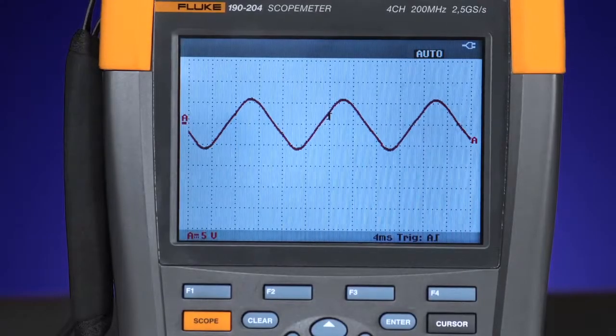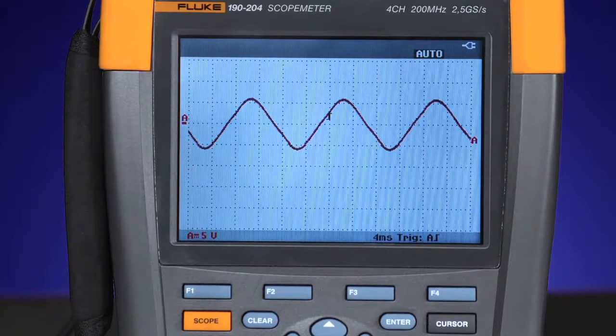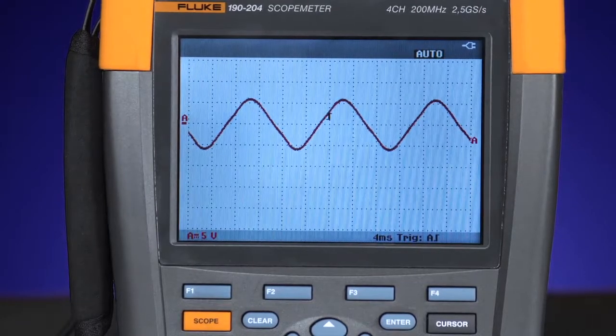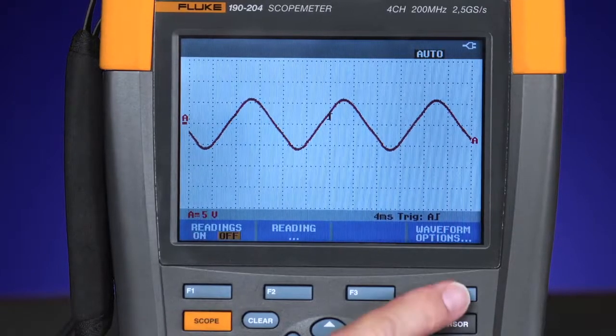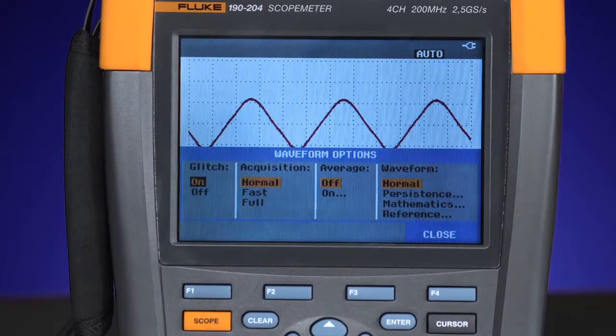The first step to set up pass-fail test mode is to capture the known good waveform and create a reference envelope. Press the scope mode, waveform options, and select reference.